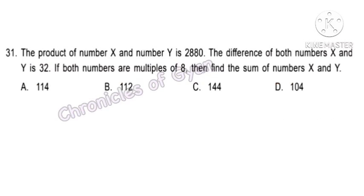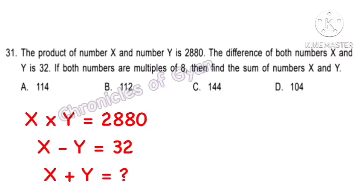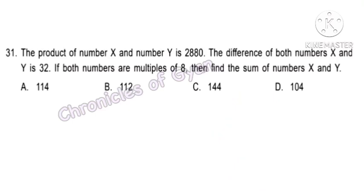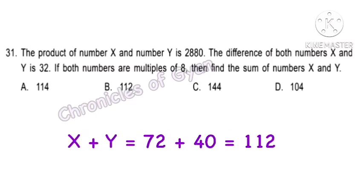Question 31 (Achiever). The product of X and Y is 2,880. The difference of X and Y is 32. Both numbers are multiples of 8. Find the sum of X and Y. Since both are multiples of 8: X equals 8 times 9 equals 72, and Y equals 8 times 5 equals 40. Their difference 72 minus 40 equals 32, confirmed. X plus Y equals 72 plus 40, which is option B — 112.